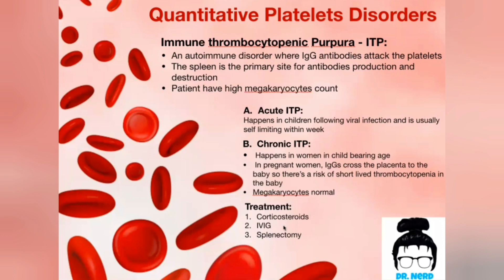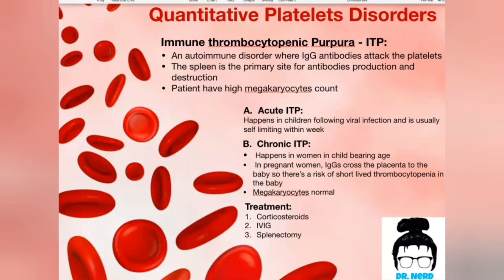Treatment for ITP involves corticosteroids as the first-line treatment. IVIG — intravenous immunoglobulins — is the second-line treatment. IVIG keeps the spleen occupied destroying the immunoglobulins, so it won't be destroying the antibody-platelet complexes, thereby preserving more platelets. The third and last treatment is splenectomy, which makes sense because removing the spleen eliminates the primary site for antibody production and destruction.